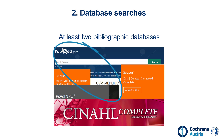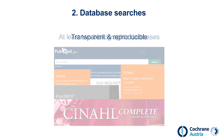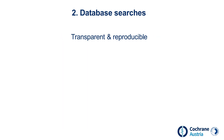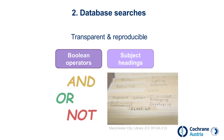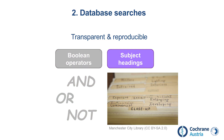It is important that the database search strategies are transparent and reproducible. To create a good database search, so-called Boolean operators and subject headings are important. More information on these topics can be found in our other videos.